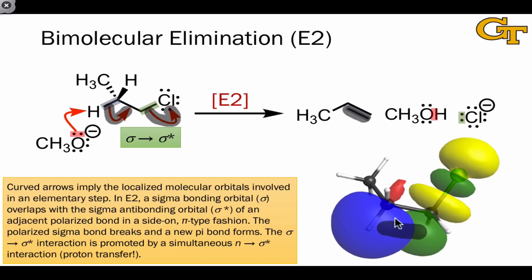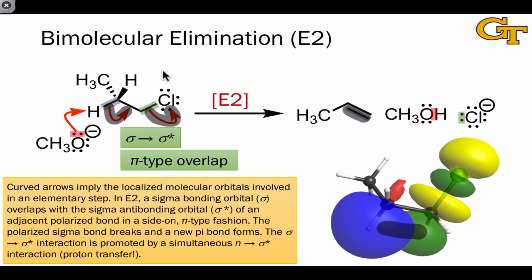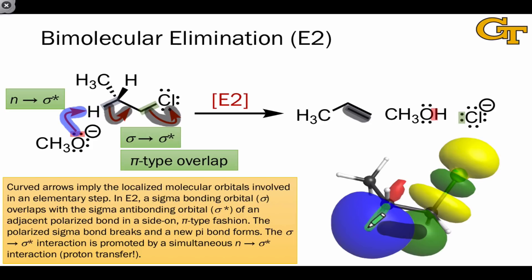The orbitals here overlap in a side-by-side fashion, much as they would when considering resonance structures. This is what we refer to as pi-type or side-on overlap. An important point is that the CH bonding electrons aren't reactive enough on their own to kick off chloride—if they were, the molecule would just fall apart spontaneously. Instead, the CH bonding electrons receive a push via donation of an electron pair from a base, such as methoxide. This n-to-sigma-star interaction gives the sigma bonding electrons the energy they need to kick off chloride. Because of this orbital overlap, the carbon-hydrogen bond and the carbon-leaving group bond must be aligned in an anti-orientation.